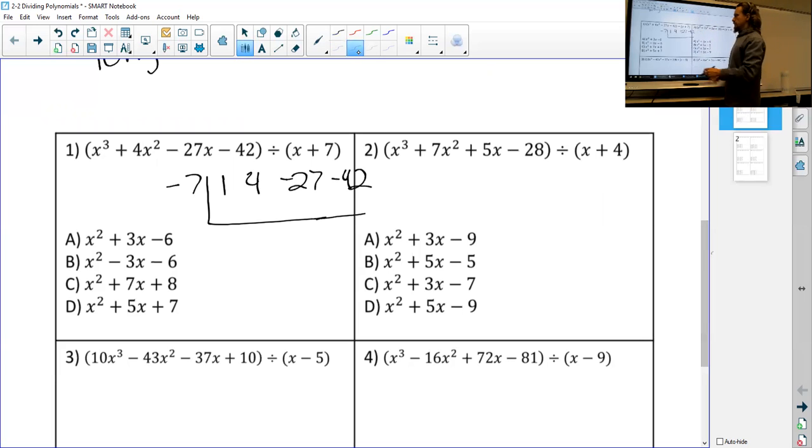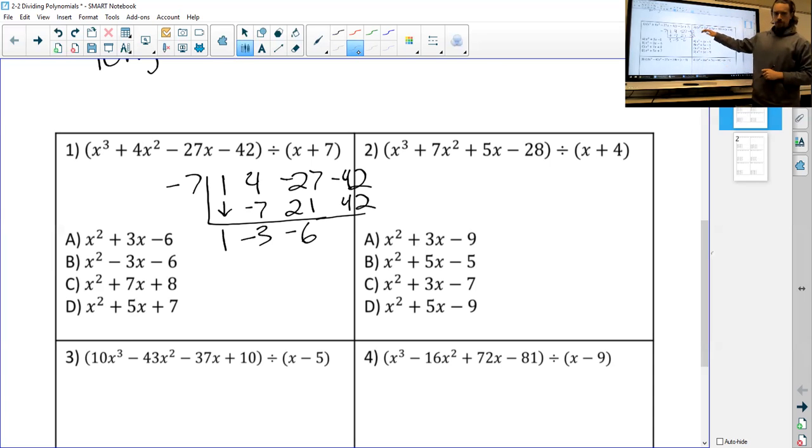Let me go through one number at a time. I bring down my 1, then I multiply: negative 7 times 1 is negative 7. I add these together: 4 minus 7 is negative 3. Then I repeat: negative 7 times negative 3 is positive 21. Negative 27 plus 21 is negative 6. Now here's the important one: I need this last one to equal 0 at the end. So negative 7 times negative 6 is positive 42, and negative 42 plus 42 cancels to 0. That means we did it right.